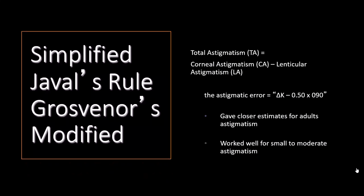Javal's simple rule was just essentially the eye provides a half diopter of against the rule astigmatism lenticularly. So the rule is to figure out the total astigmatism in the spectacle plane, take their corneal astigmatism minus the lenticular astigmatism, and that will give you your spectacle predicted astigmatism. This gave closer estimates for adults with astigmatism as well as children. It worked well for small to moderate levels of astigmatism.